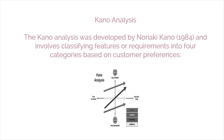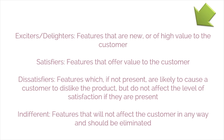Kano analysis was developed by Noriaki Kano in 1984 and involves classifying features or requirements into four categories based on customer preferences: exciters or delighters — features that are new or high value to the customer; satisfiers — features that offer value to the customer; dissatisfiers — features which, if not present, are likely to cause a customer to dislike the product but do not affect satisfaction if they are present; and indifferent — features that will not affect the customer in any way and should be eliminated.